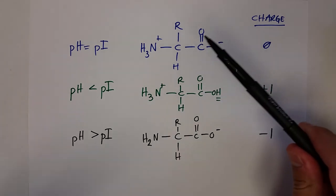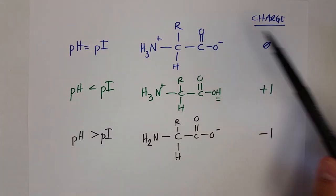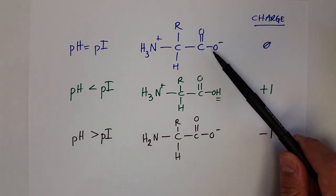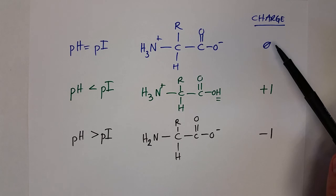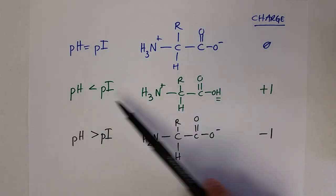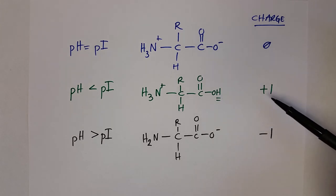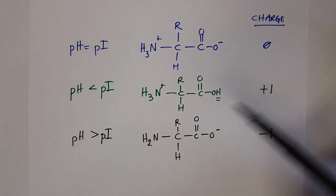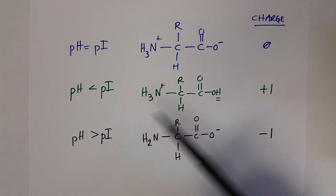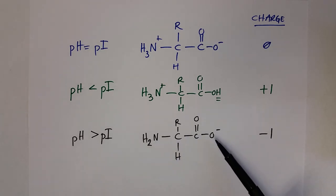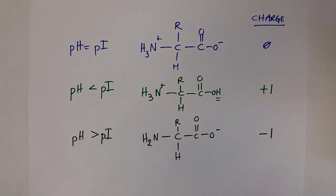To summarize: when the pH equals the PI, the amino acid is in its zwitterion form — both the amine and carboxylic acid ends are charged, giving a net charge of zero. When the pH is less than the isoelectric point, the carboxylic acid becomes protonated and the amino acid has an overall +1 charge. When the pH is greater than the isoelectric point, the amine doesn't accept protons and the carboxylic acid is deprotonated, giving the amino acid a -1 charge.